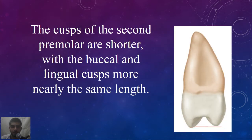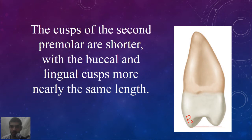The cusps of the second premolar — both the buccal and lingual cusps — are shorter, and more nearly at the same level, or more nearly the same length. In the Maxillary First Premolar, the buccal cusp is longer by one millimeter from the lingual cusp, while here the buccal cusp is nearly — not entirely — nearly at the level of the lingual cusp, or nearly the same length.